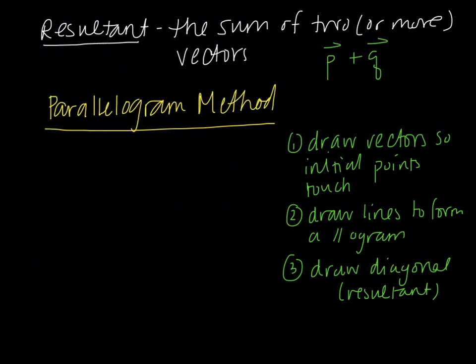We have something called a resultant, which is the sum of two or more vectors. You can think of vectors as like forces in physics — if you have two forces that are working together, what they result in is a combined force that is the addition of the two vectors. When we add up two vectors together, we get something called the resultant. So if we have vector P and vector Q and we add them together, the resultant is vector P plus vector Q.